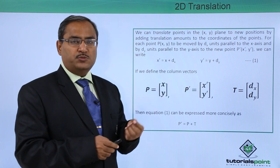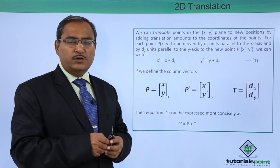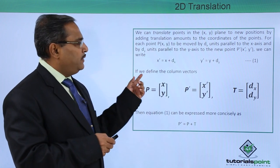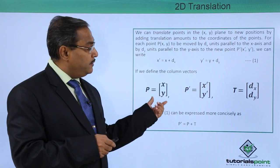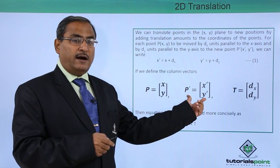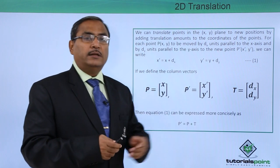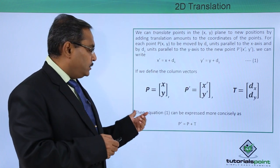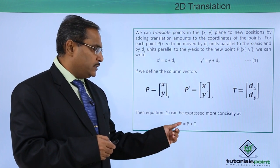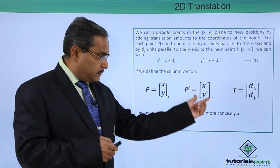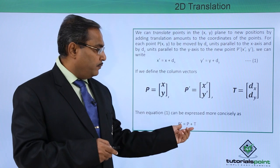This is the displacement we are doing. dx is done along the x axis and dy is done along the y axis. If we define the respective column vectors, P is the original point represented by this matrix, and P' is the point position after translation. This particular vector denotes the respective displacement vector. The equation can be expressed more concisely as P' = P + T.